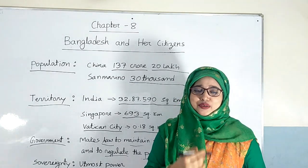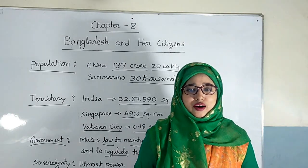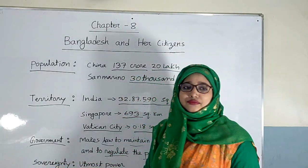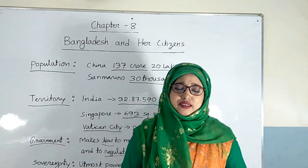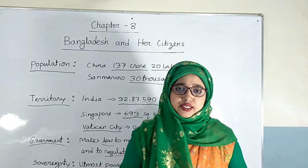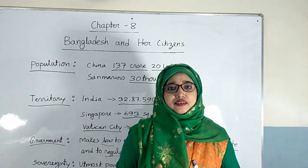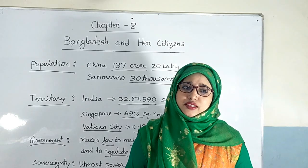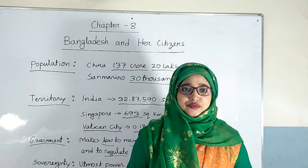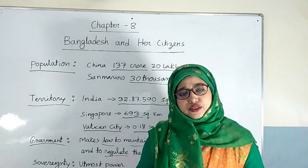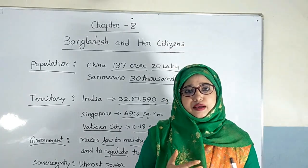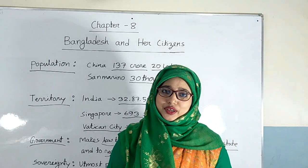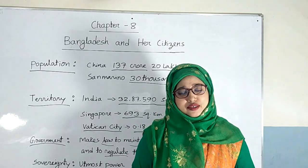Now I am going to discuss the utmost power of a state, which is called sovereignty. By this power, our state can protect itself from other countries' intervention. This is the utmost or highest power of the state, also called the supreme power of the state. By virtue of this sovereign power, our state remains above individuals and organizations. So it is a very important component of our state.